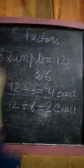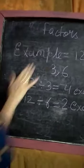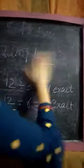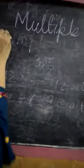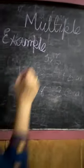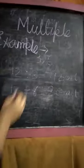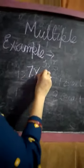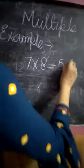Next is what is a multiple? Multiple is the product result of one number multiplied by another number. For example,